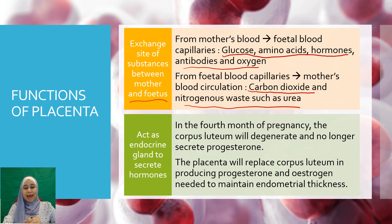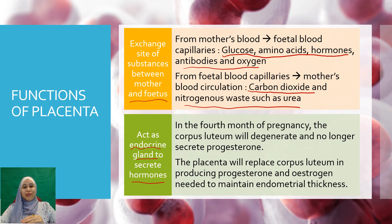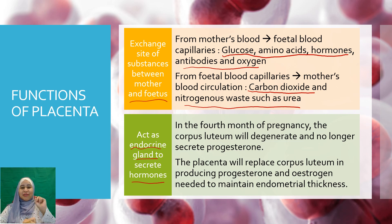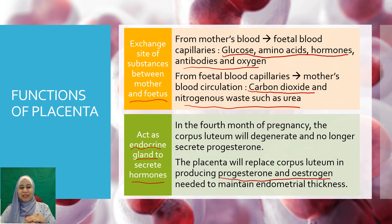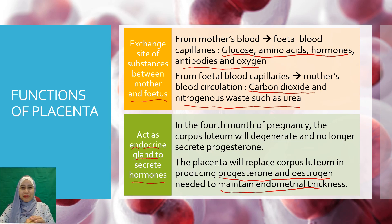The second function of the placenta is that it can act as an endocrine gland to secrete hormones. In the fourth month of pregnancy, the corpus luteum will degenerate, so there is no more secretion of progesterone. The placenta will then take over the role by producing progesterone and estrogen, which are needed to maintain the thickness of the endometrium.